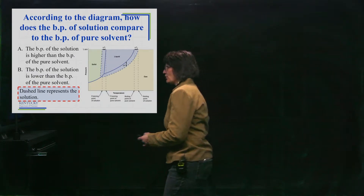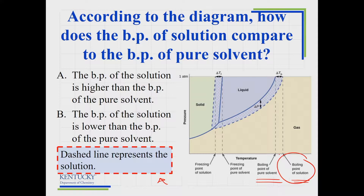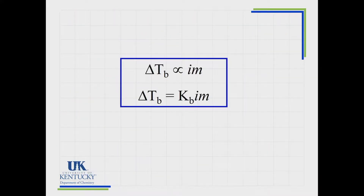Let's look at this graph and focus in on what's going on. Looking at the boiling point end of things, compare the boiling point of the solution with the boiling point of the pure solvent. The dashed lines represent the solution. We can see that the boiling point of the solution is higher in temperature than the boiling point of the pure solvent — that's boiling point elevation.